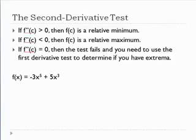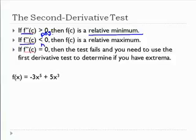The second derivative test: if you take the second derivative and plug in the critical values and it gives a positive number, then at that point it is a relative minimum — because positive means concave up. If the second derivative is less than zero (negative), that means it's concave down, so you have a relative maximum. And if the second derivative test fails — meaning the second derivative equals zero — then you can't use it to determine minimum or maximum and you'd have to go back and use your first derivative test.